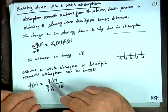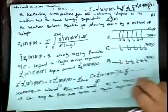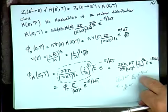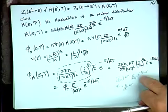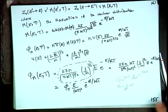The energy-dependent flux in the slowing-down region is given by q / (ξ × σ_total(E) × E). We then moved on to calculate the flux in the thermal energy region, finding that it is given by a Maxwellian distribution function, but with two modifying phenomena.